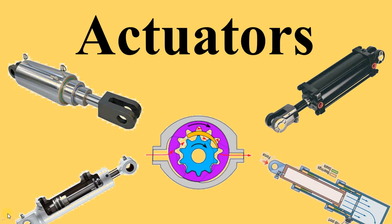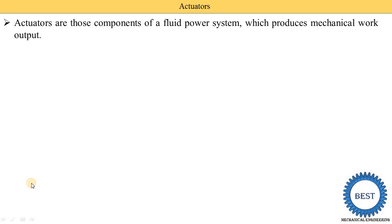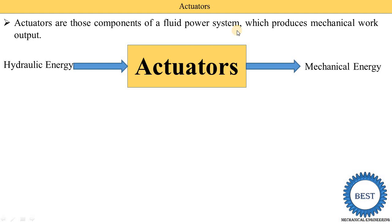In this video I explain what actuators are. Actuators are used in hydraulic and pneumatic systems, meaning fluid power systems. They are components of a fluid power system which produce mechanical work as an output. In actuators, we supply hydraulic or pneumatic energy, and this energy is converted into mechanical energy. The basic function of the actuator is to convert hydraulic energy into mechanical energy.